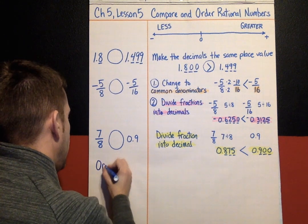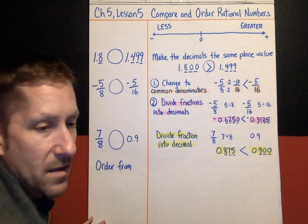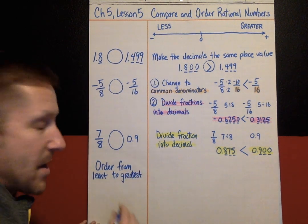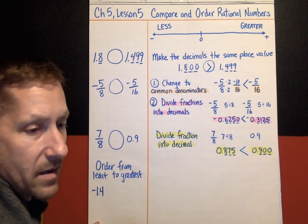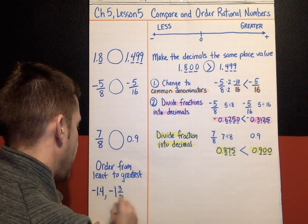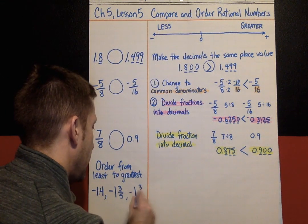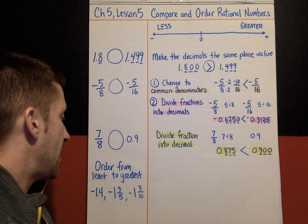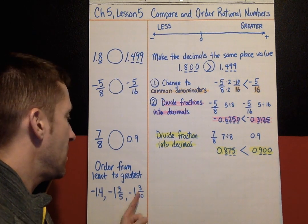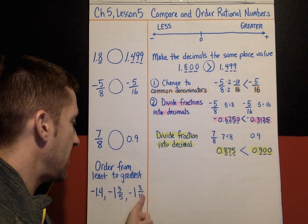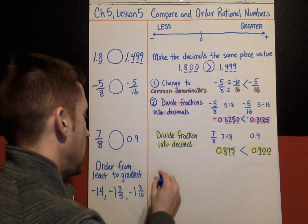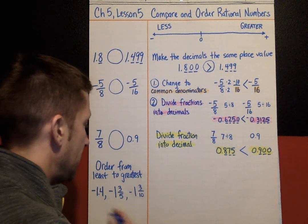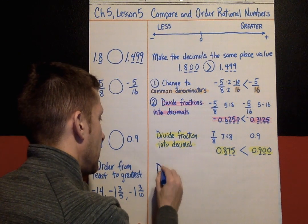Last example: order from least to greatest — negative 1.4, negative 1 and 3/5, and negative 1 and 3/10. All three are negative. I'm going to divide the fractions into decimals. The 3/5 and 3/10 parts need to be converted; negative 1.4 is already a decimal.